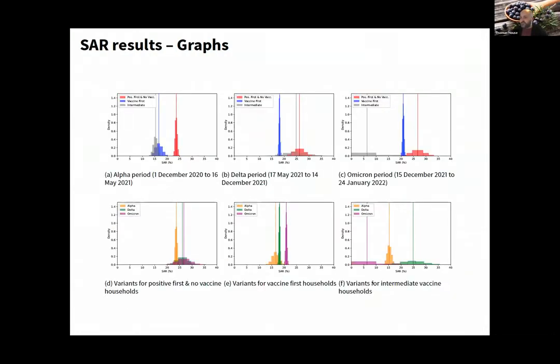We stratified households into groups depending on vaccination status. Significant vaccination meant at least one person at least three weeks after a full vaccine course. Then those not vaccinated at all, and a group in between where some were partially vaccinated.